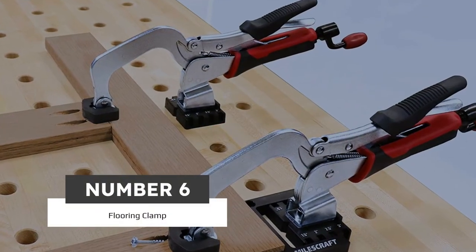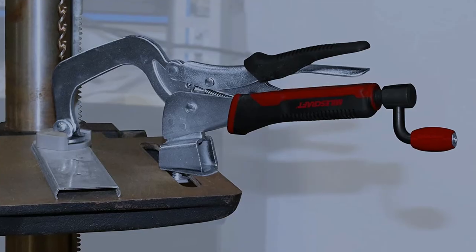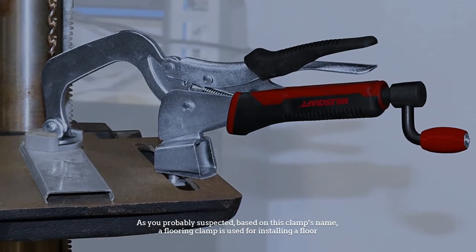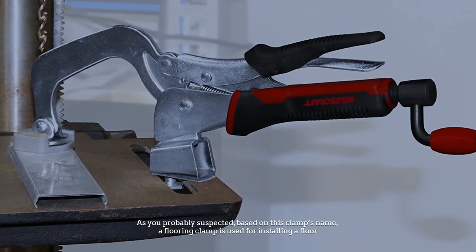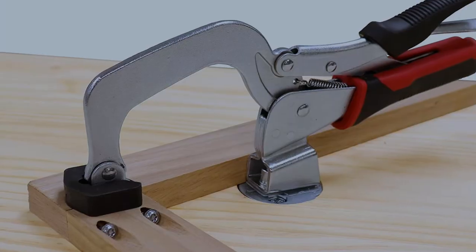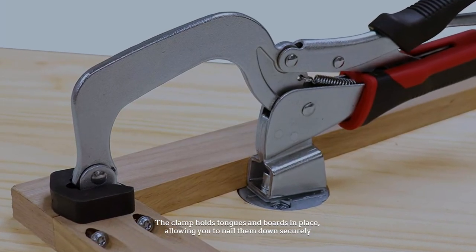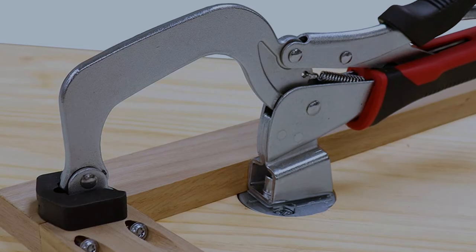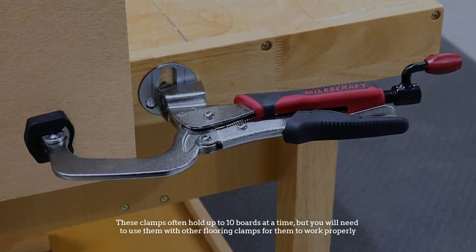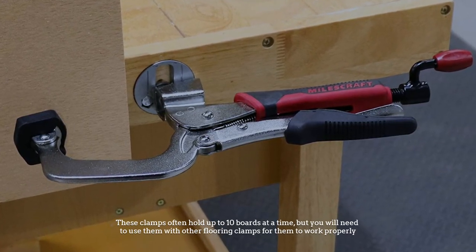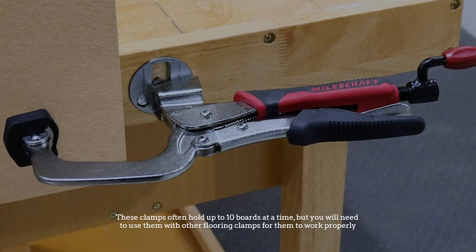Number six: Flooring clamp. As you probably suspected based on this clamp's name, a flooring clamp is used for installing a floor. The clamp holds tongues and boards in place, allowing you to nail them down securely. These clamps often hold up to 10 boards at a time, but you will need to use them with other flooring clamps for them to work properly.